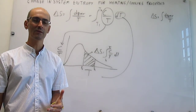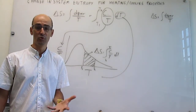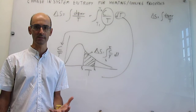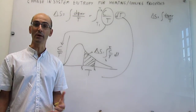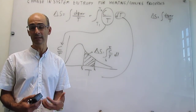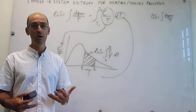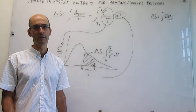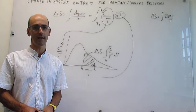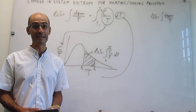To summarize: we've learned how to calculate the change in entropy of a substance whose temperature is varying. In the easiest case, the heat capacity is constant with temperature, and we worked through an applied example. In more mathematically involved cases, the heat capacity depends on temperature, requiring analytical integration or graphical integration. In the next video, we'll continue with entropy calculations by focusing on how to calculate the change in entropy in a phase transition.